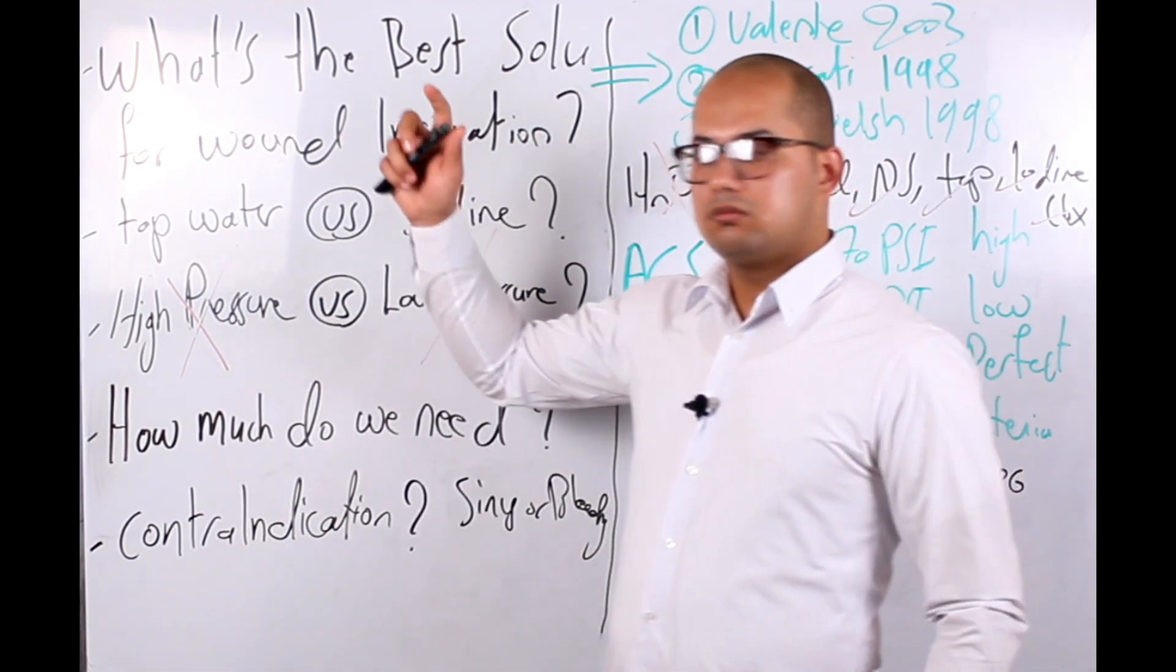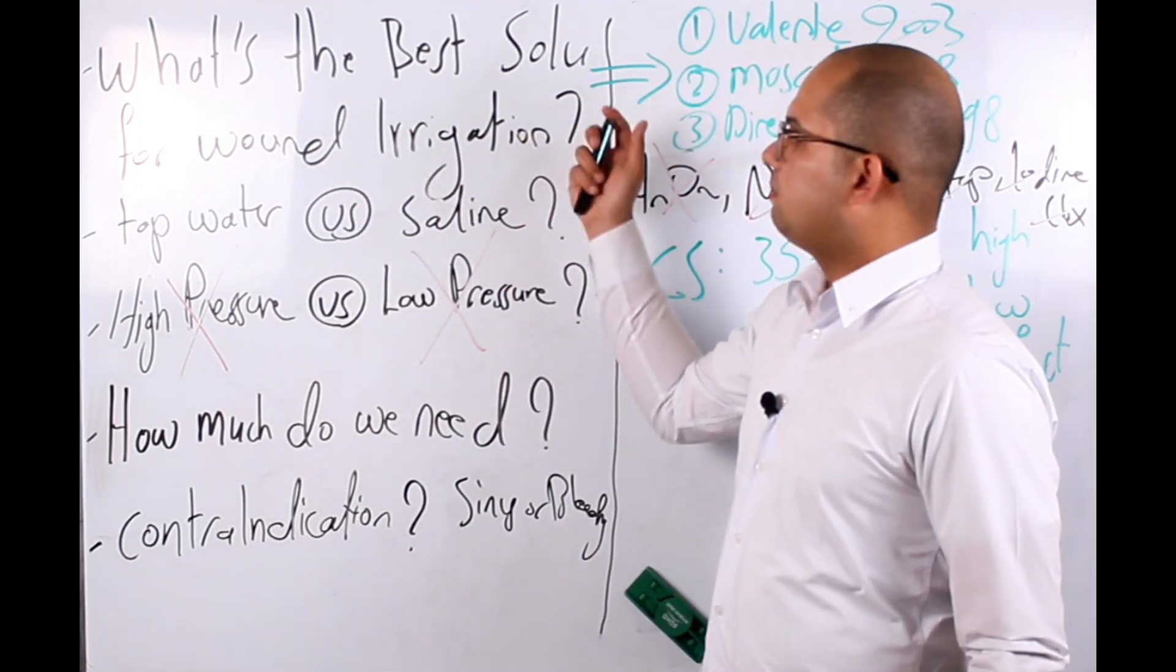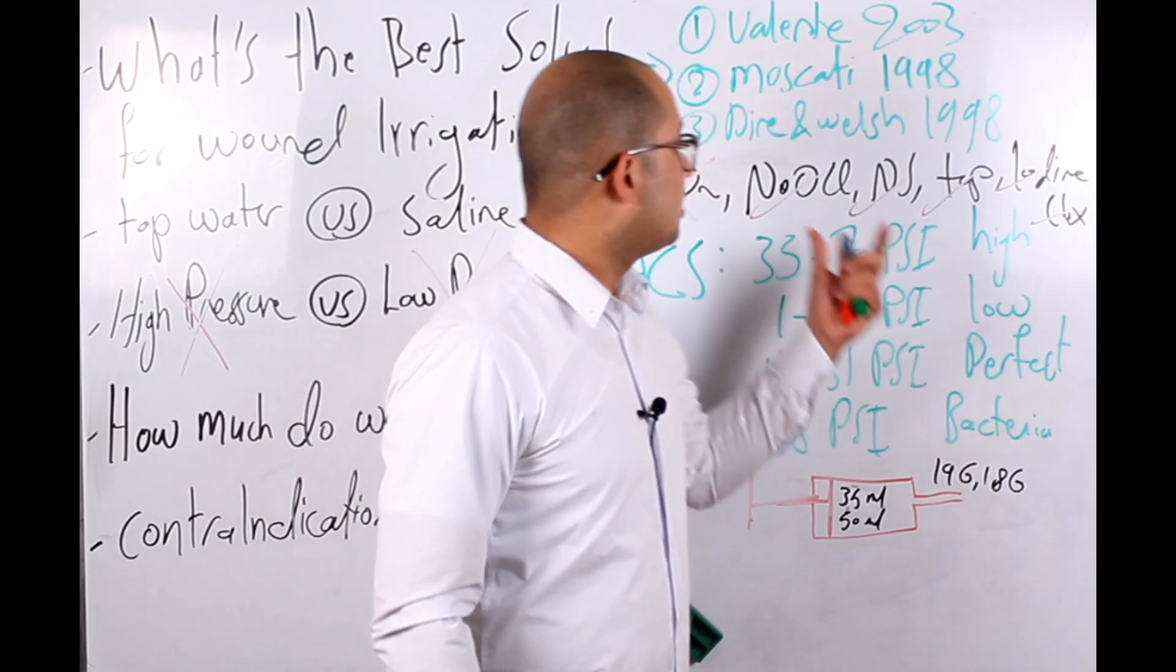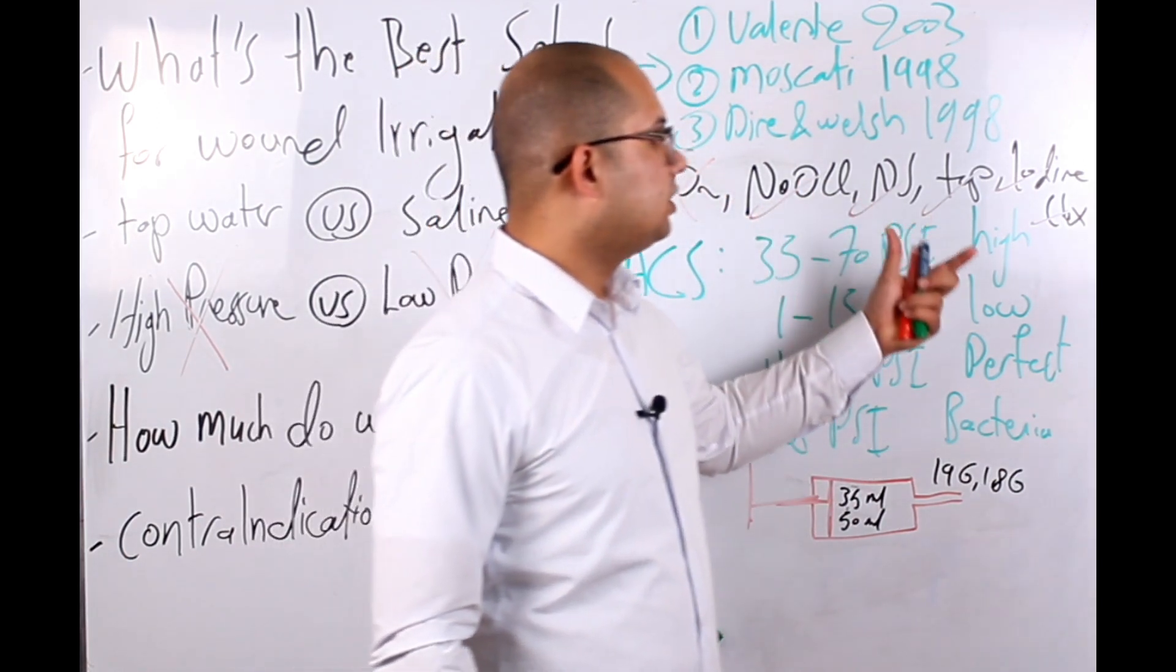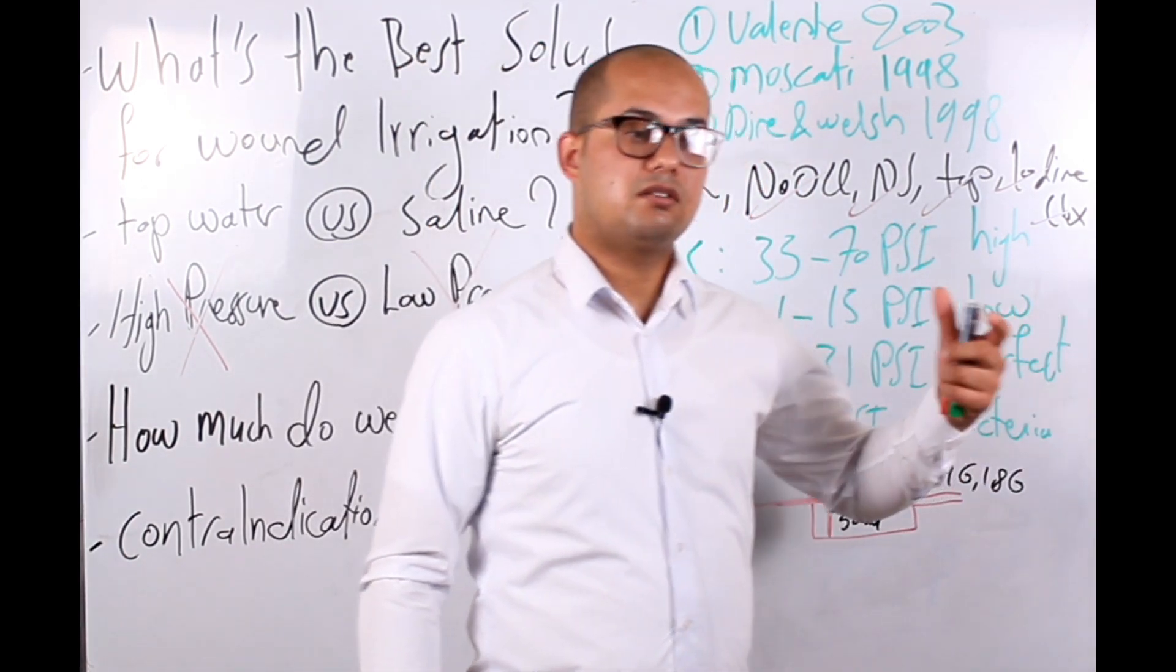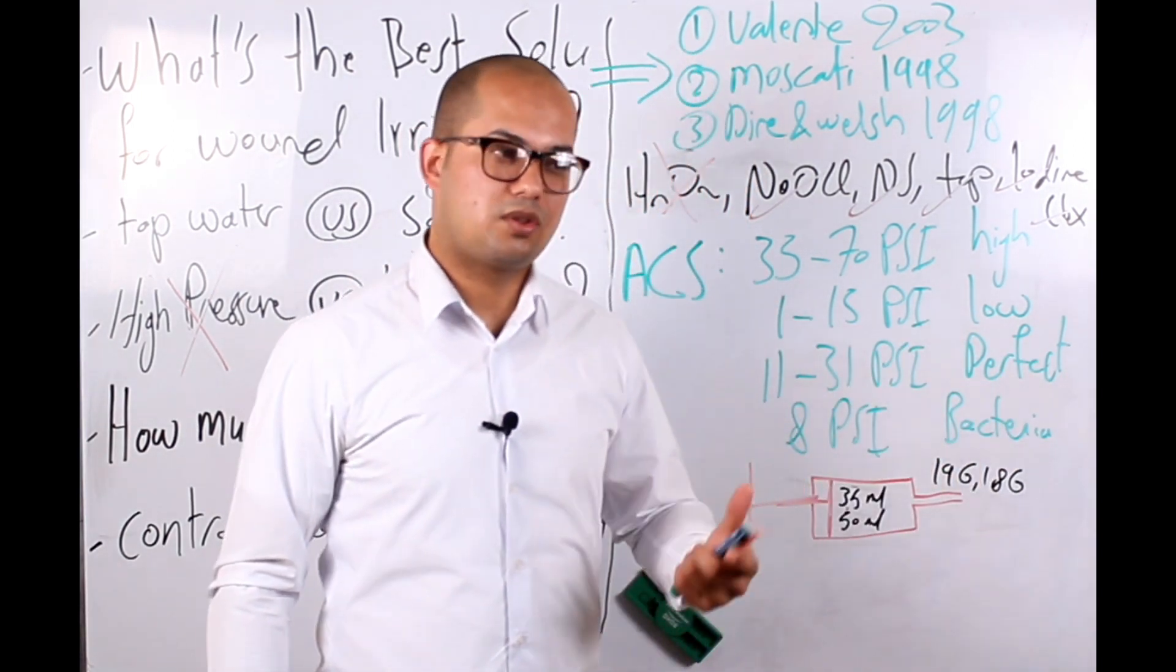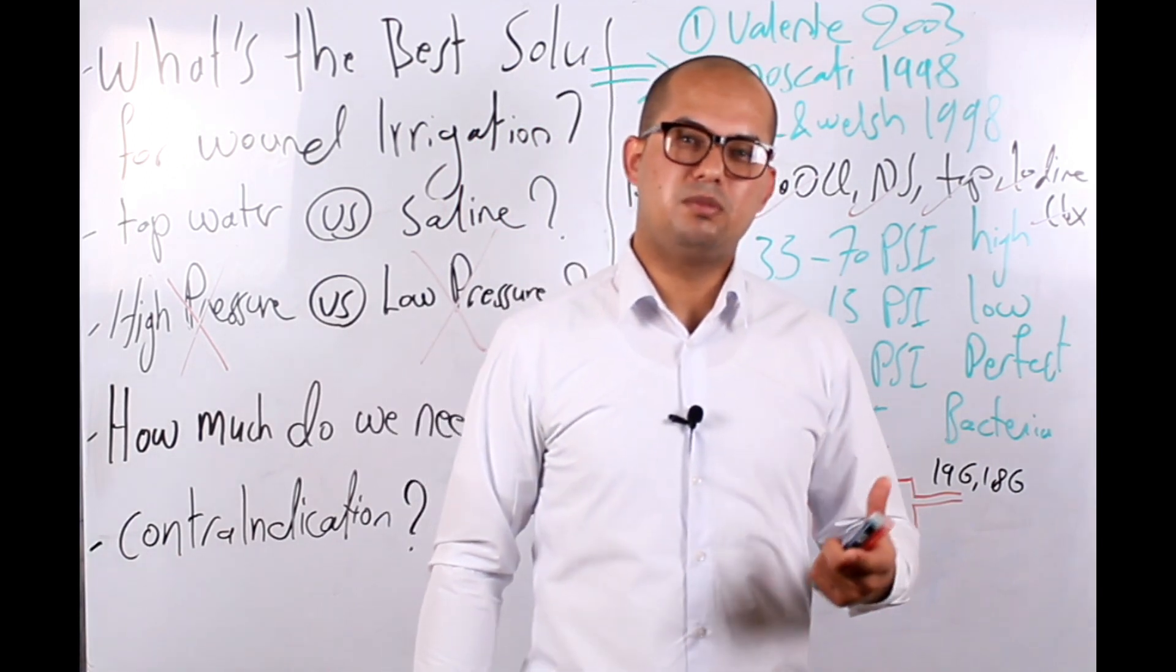Now let's discuss the first question: what's the best solution for wound irrigation? Logically, it seems that sodium hypochlorite, iodine, chlorhexidine - they are better because they have ability to kill bacteria, so that the infection rate will be lower when you use those irrigants.